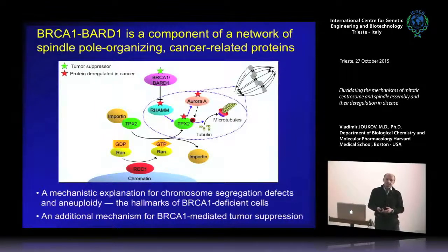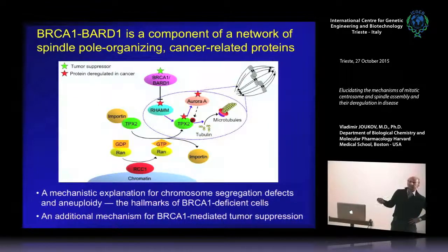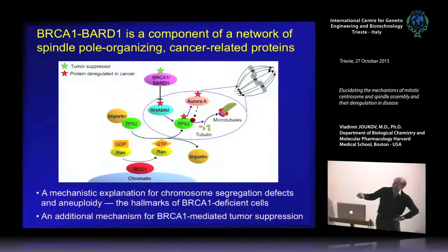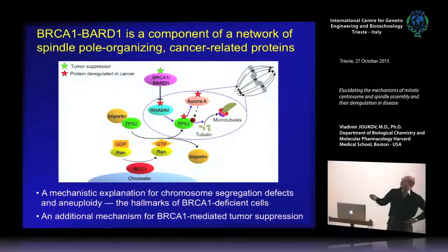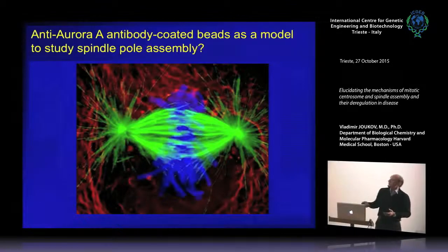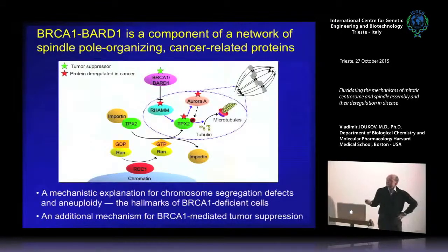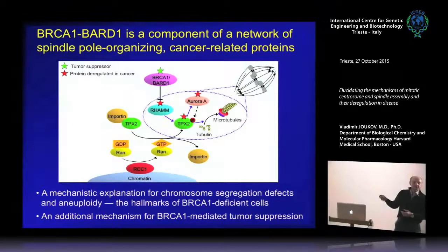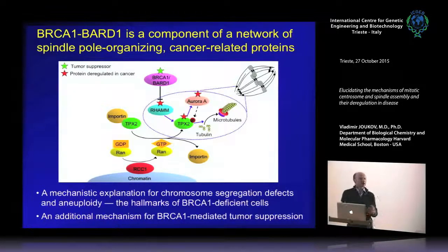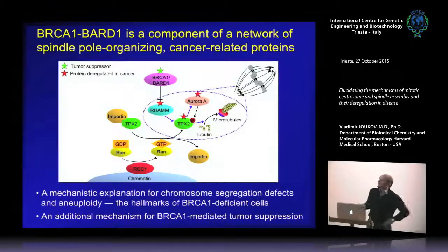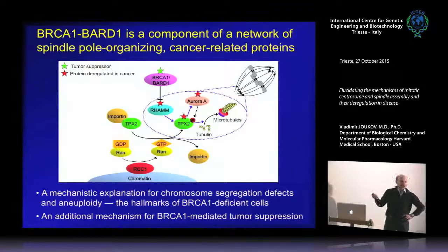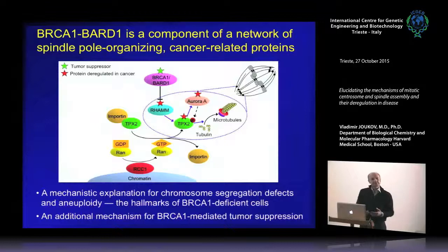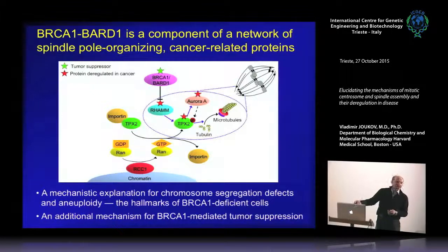RHAMM, TPX2, and Aurora A — which is regulated and activated by TPX2 at microtubules — are all controlled by BRCA1. These proteins have been found to be upregulated or deregulated in cancers. Therefore, our data demonstrate that defects in this process can underlie chromosome segregation defects, which are a hallmark of BRCA1-deficient cancer. Given the cancer association of these proteins, this also suggests an additional mechanism that may at least in part contribute to BRCA1-mediated tumor suppression, beyond its well-known role in DNA repair.